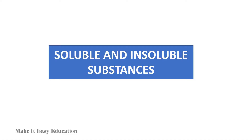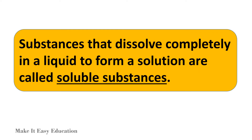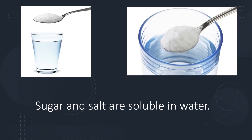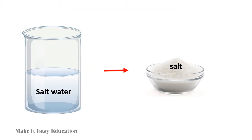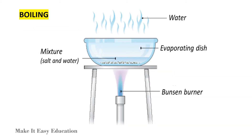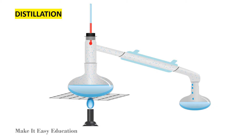Soluble and insoluble substances. Substances that dissolve completely in a liquid to form a solution are called soluble substances. Sugar and salt are soluble in water. We can separate soluble substances from liquid by methods such as boiling and distillation. For example, the soluble substance salt can be separated from the salt solution by the process of boiling and distillation.